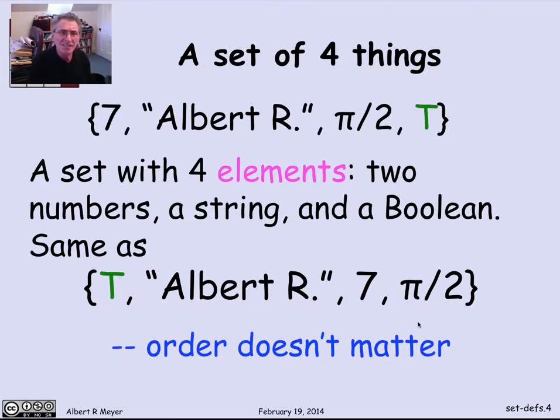Now, to a computer scientist, this is a little unnatural. The most natural thing would be to define a sequence of things, like the sequence that began with 7, then had the character string, then had the number, then had the Boolean. And you can get by with working with lists of things, as long as they're finite.